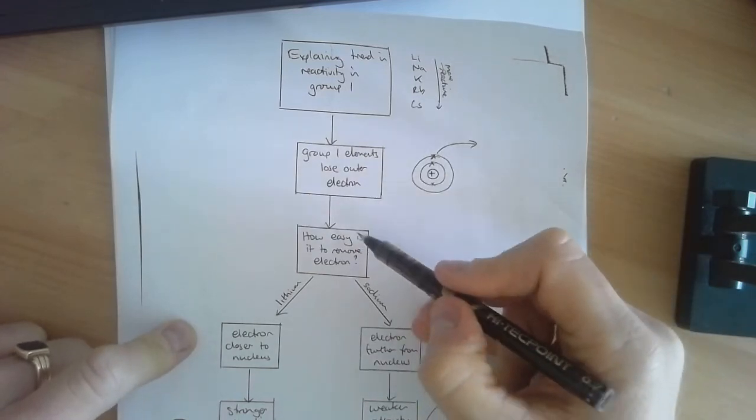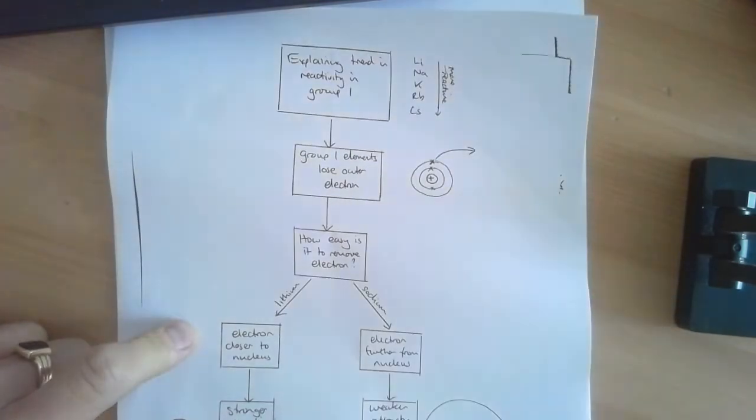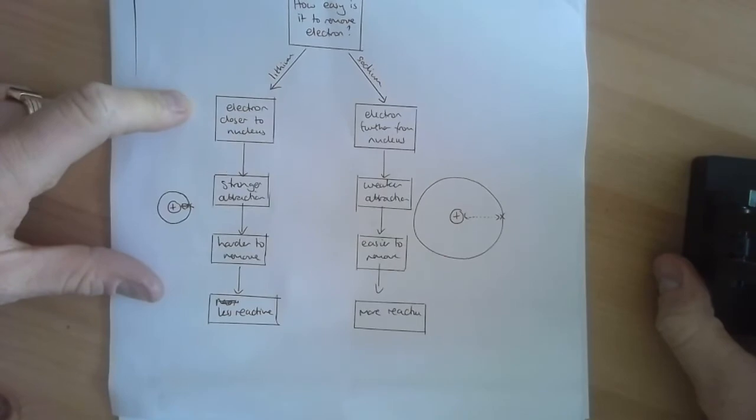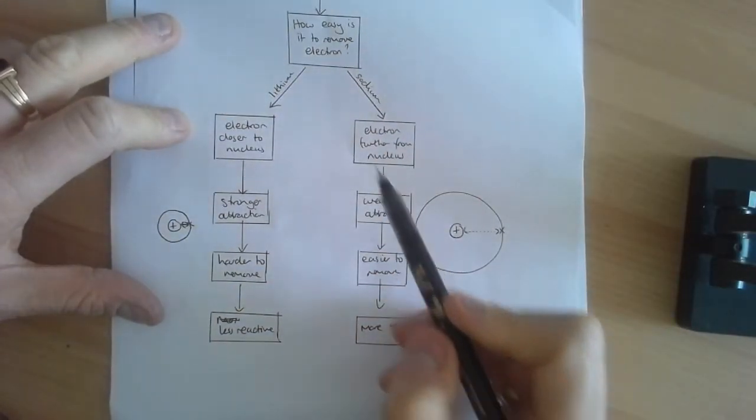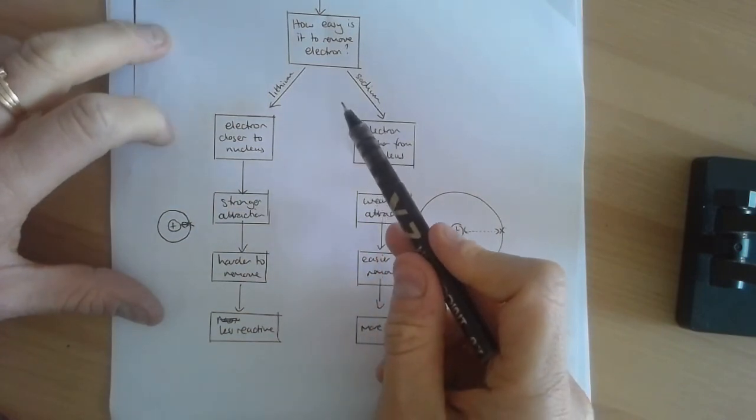Here's a diagram of that electron being removed for lithium. And therefore, we ask ourselves, how easy is it to remove that electron? We can compare, in this case, I've compared lithium and sodium. And it's a similar idea as what we just did previously.